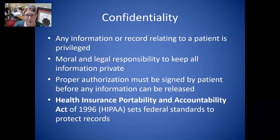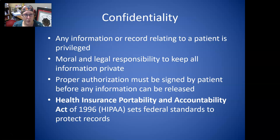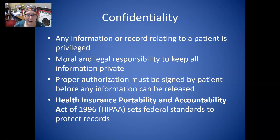Proper authorization must be signed by a patient before any information can be released, and that authorization generally states who can have access to that information — oftentimes a spouse, children, or parents, depending on the situation, and they have to be listed on this form. It's often called a HIPAA form, referring to the Health Insurance Portability and Accountability Act that was passed in 1996, which sets federal standards to protect records.